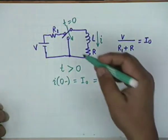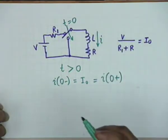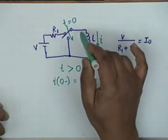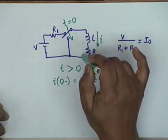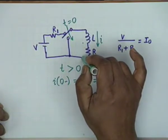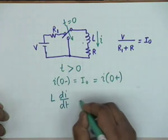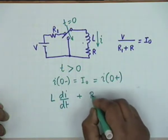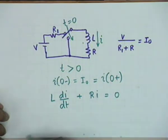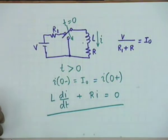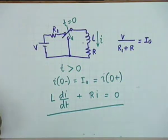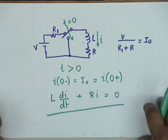The differential equation is obtained by KVL: the drop across the inductance L·di/dt plus the drop across the resistance R·i should equal zero, since there is a short circuit. This is a first order differential equation, and this defines the order of a circuit. If a circuit's natural response can be described by a first order differential equation, then it is a first order circuit.